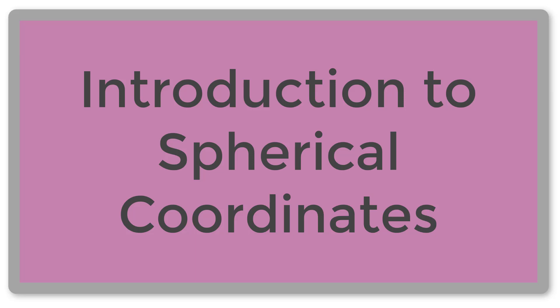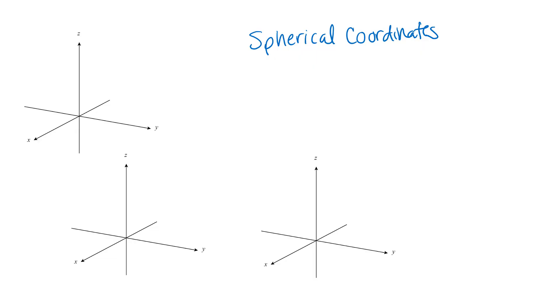We're going to look at spherical coordinates, which is another way to extend polar coordinates to three dimensions. We already looked at cylindrical coordinates, where you use polar coordinates in the XY direction and rectangular coordinates in the Z direction. With spherical coordinates, we're really going to do a full extension of polar coordinates to three dimensions, using angles of rotation and radii in all three dimensions, not just parallel to the XY plane.